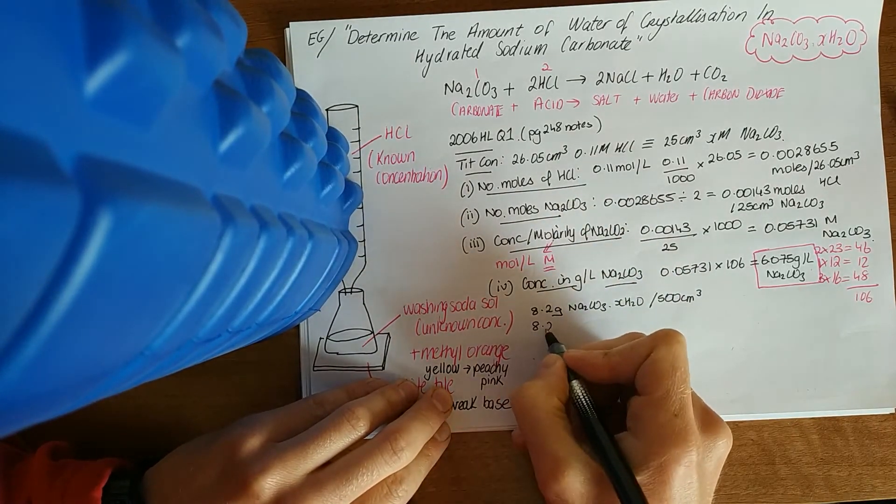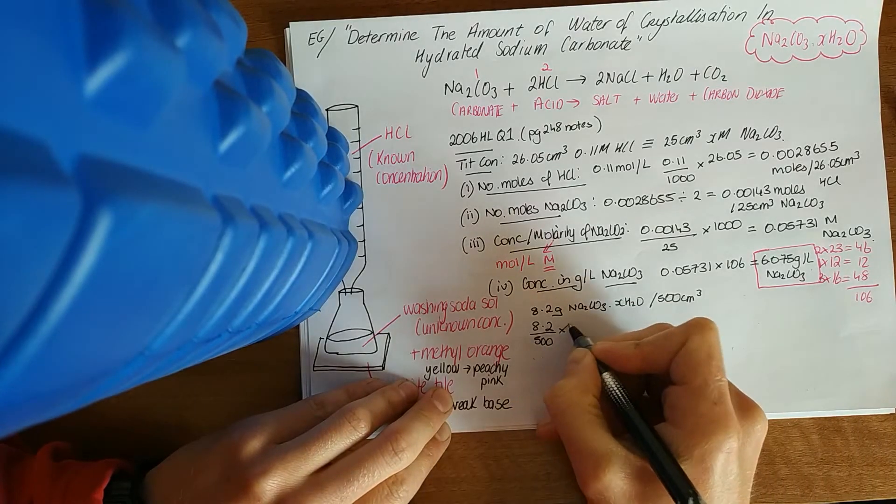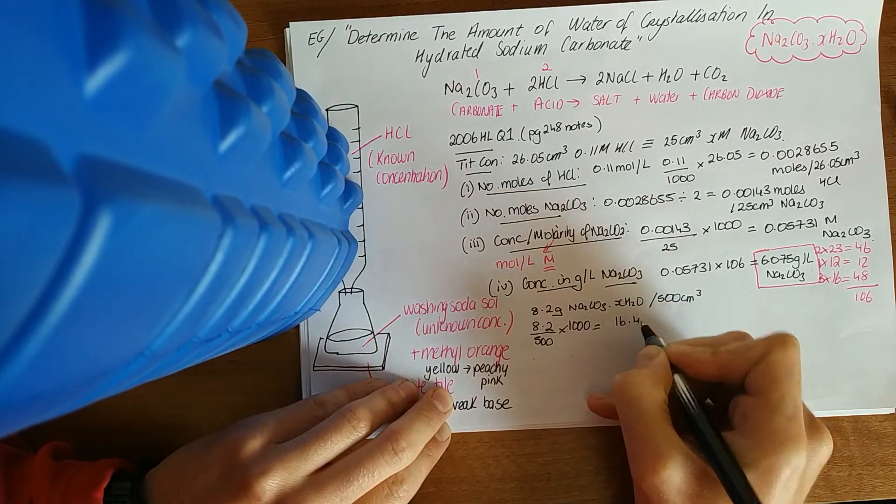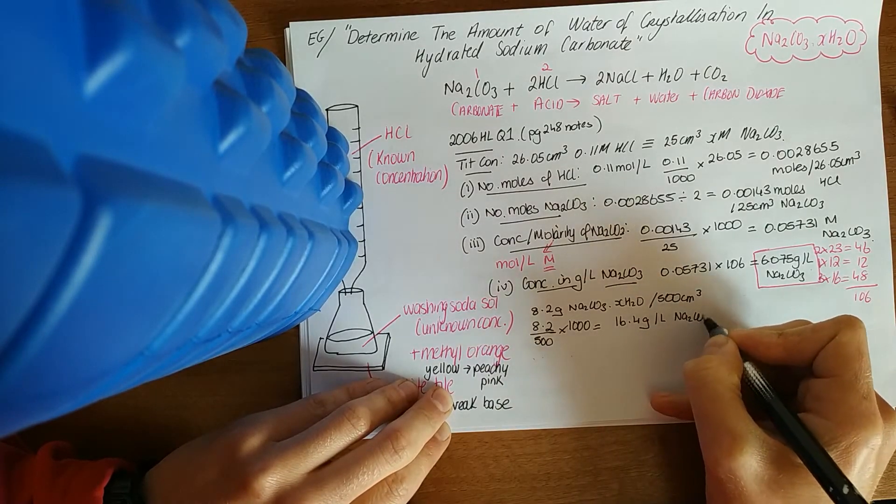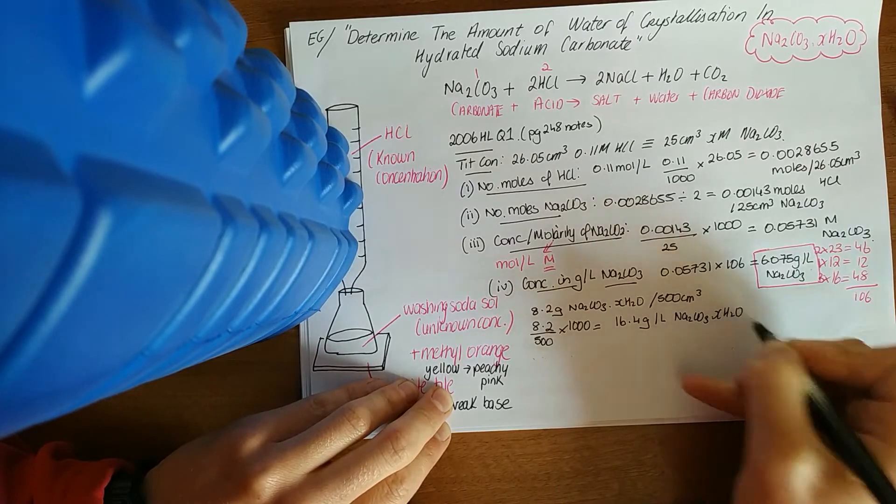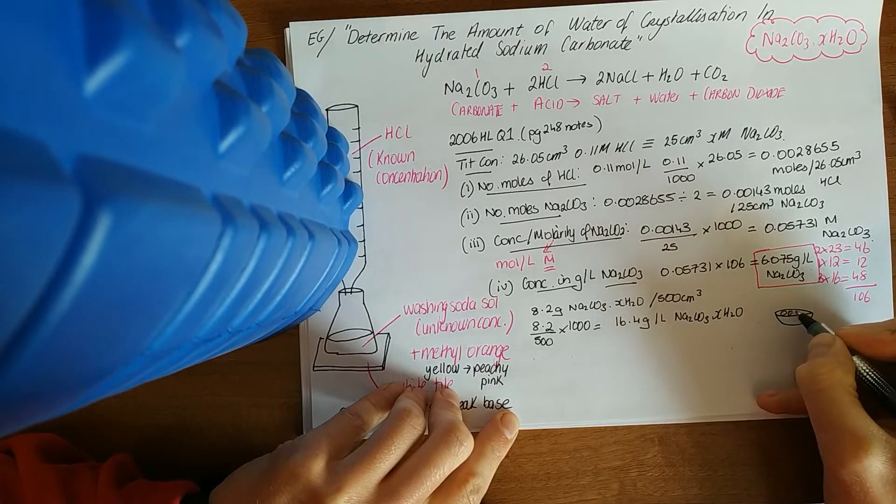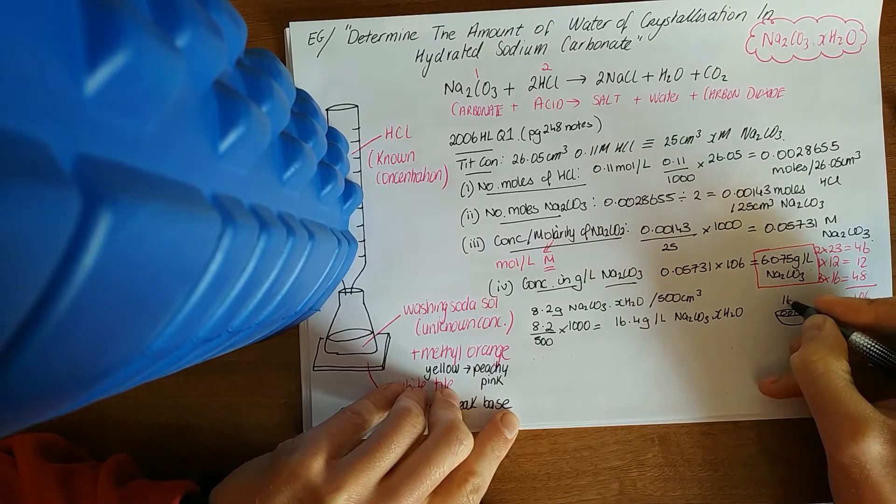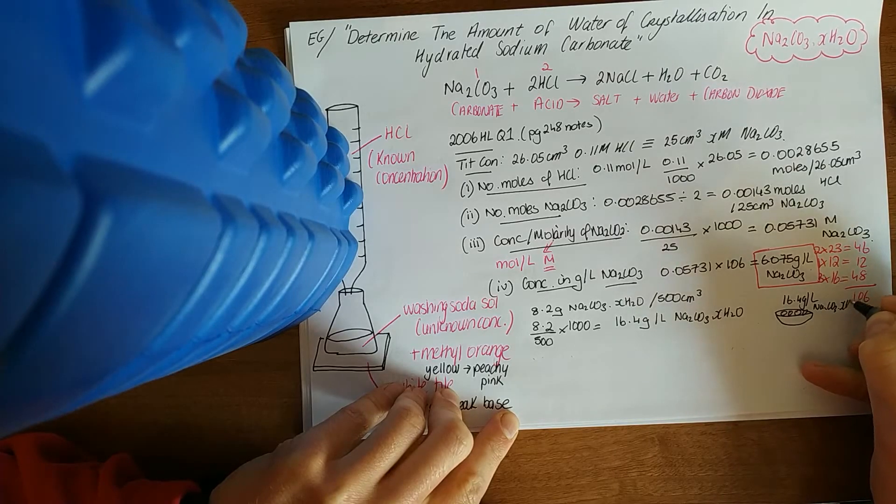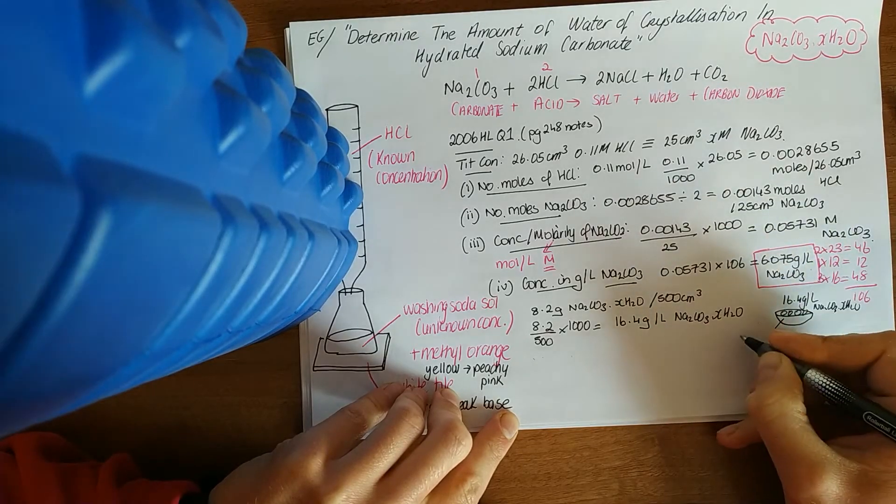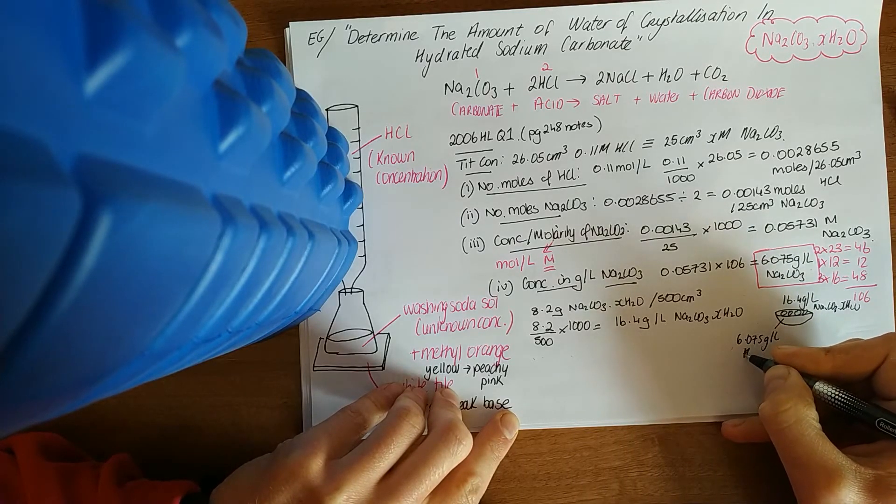If you like using what we've used before, in 500, over 500, times that by 1,000, gives you 16.4, just doubling it, grams per litre of hydrated crystals. So we've got these crystals. We have 16.4 grams per litre of them. 6.075 grams per litre of that is Na2CO3.